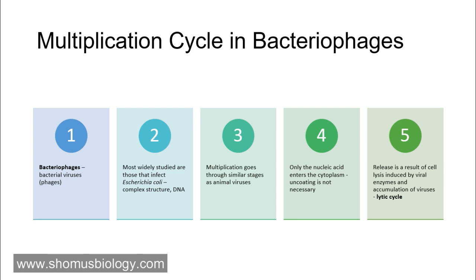The multiplication cycle in bacteriophages: bacteriophages are viruses that infect bacteria. The most widely studied bacteriophages are those that infect Escherichia coli. Multiplication goes through similar stages as an animal virus, except that only the nucleic acid enters the cytoplasm — uncoating is not necessary. It is like an injection: only the nucleic acid is injected inside the bacterial host, then that genetic material hijacks the host cell machinery, causing the burst of E. coli and releasing all viral components outside.